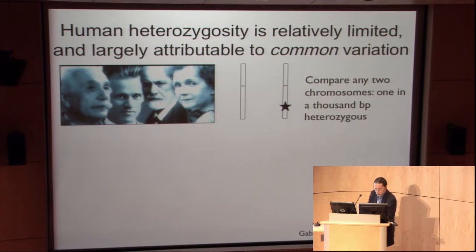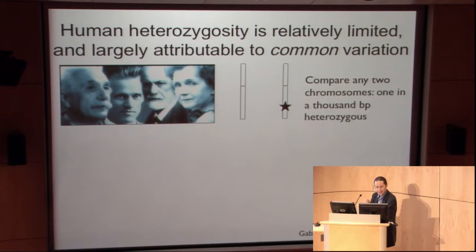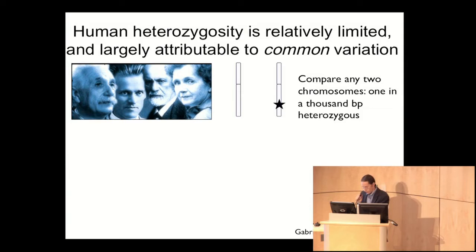Starting with sequencing studies done on a very small scale as part of the human genome sequencing project, it came to pass that the human genome project was not being conducted on a single individual but on sequence from a handful of different individuals. There were many opportunities to compare the sequence of a region of the genome from one individual versus another, and what we began to find was really, for the first time, an empirical understanding of human genetic variation.